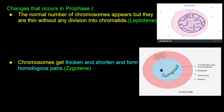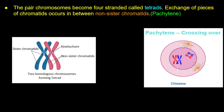Next, in Zygotene, chromosomes get thick and short. Homologous pairs come together — they are called homologous pairs. We can see two chromosomes pairing up. The paired chromosomes become bivalents — four chromatids forming a tetrad.